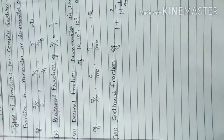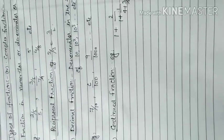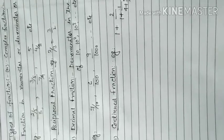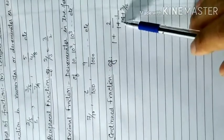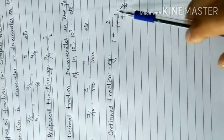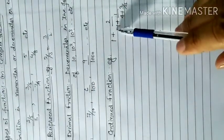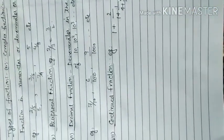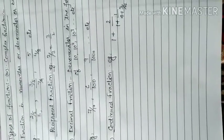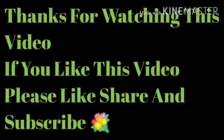For example, six upon hundred or nine upon thousand — those will be decimal fractions. Now the last type is continued fraction. A continued fraction is expressed as a sequence like one plus one over two plus one over one plus one over four, and so on.